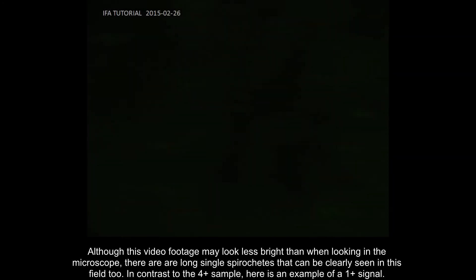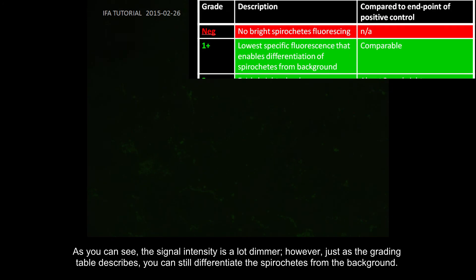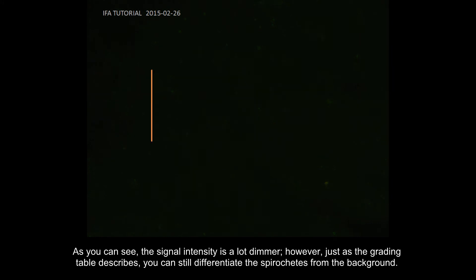In contrast to the 4-plus sample, here is an example of a 1-plus signal. As you can see, the signal intensity is a lot dimmer. However, just as the grading table describes, you can still differentiate the spirochetes from the background.